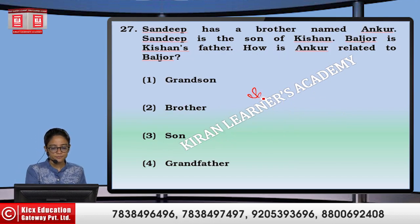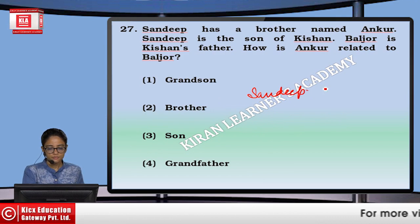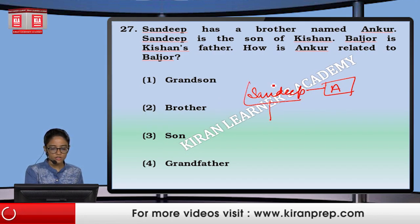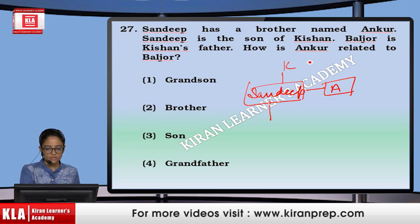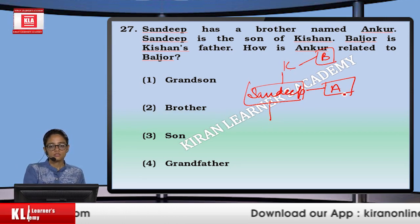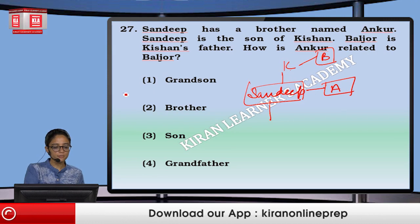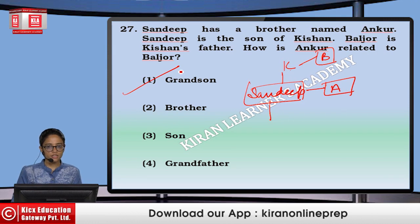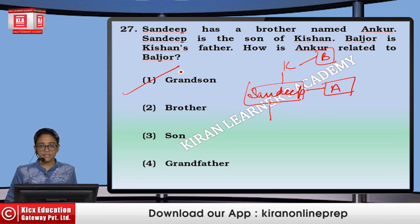Next: Sandeep has a brother Ankur. Sandeep is the son of Kishan, and Baljor is Kishan's father. How is Ankur related to Baljor? Kishan is son, so sons — sons will be grandson. That means option number one. So these are the questions we looked at for blood relation, which are very important from the exam point of view — direct and indirect type specially. Thank you.